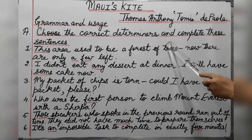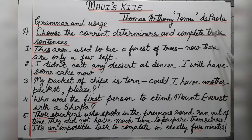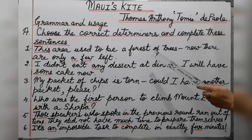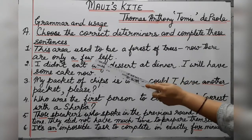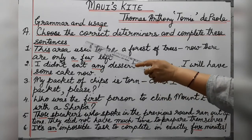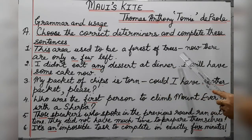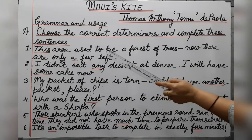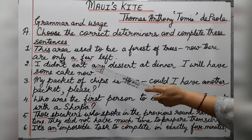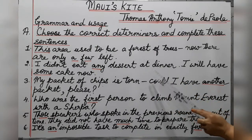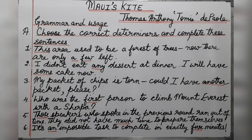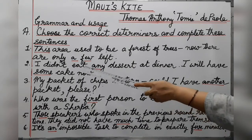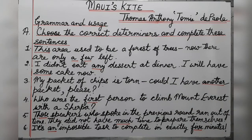Now we are doing the exercise: choose the correct determiners to complete the sentences. Number one: 'This area used to be a forest of trees. Now there are only a few left.' Number two: 'I didn't eat any dessert at dinner. I will have some cake now.' Here we have used the quantifiers 'any' and 'some.'